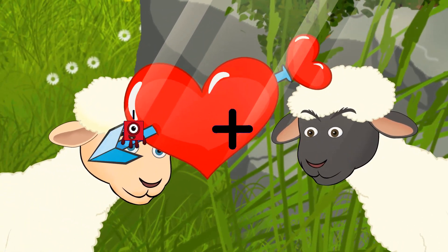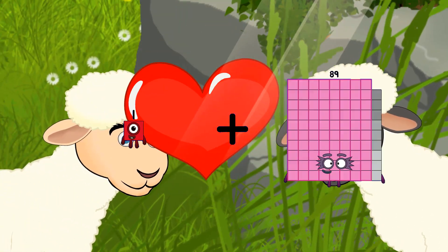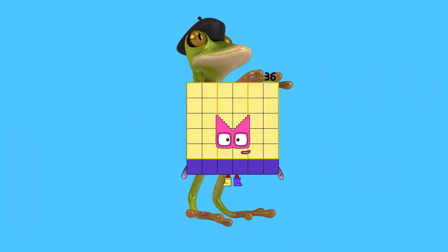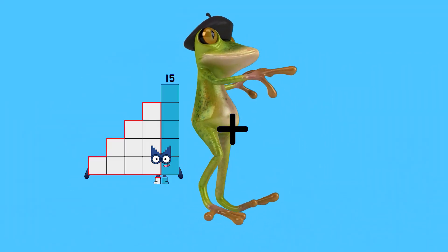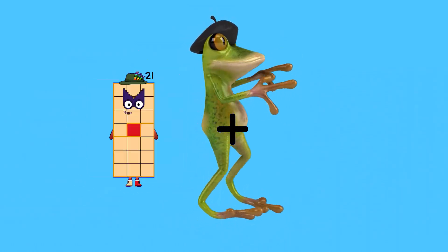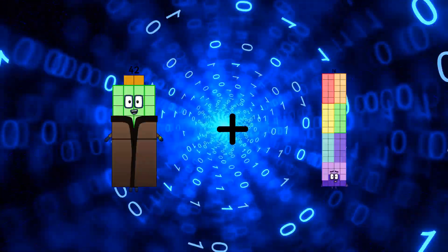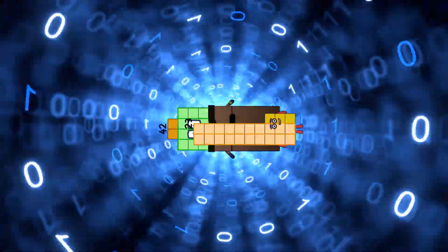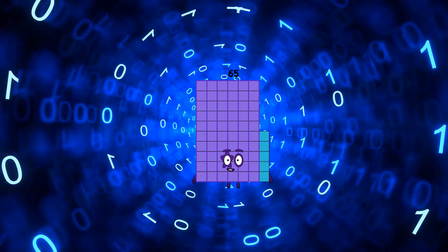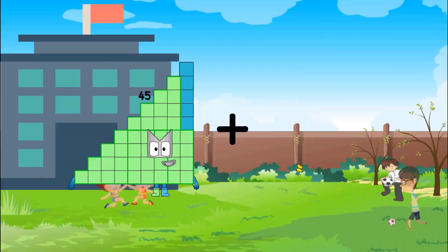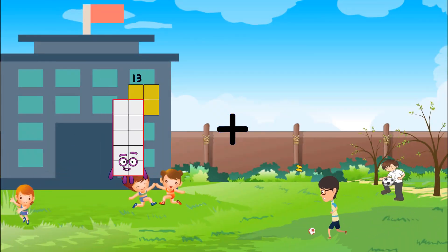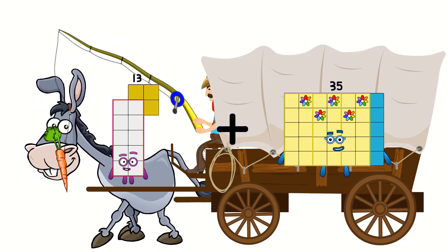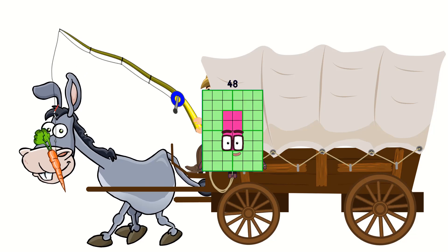1 plus 35 equals 36. 42 plus 23 equals 65. 13 plus 35 equals 48.